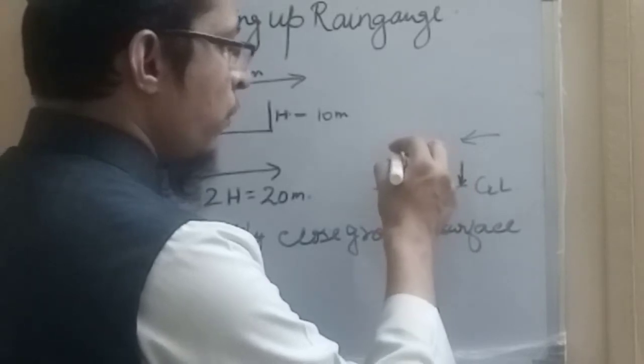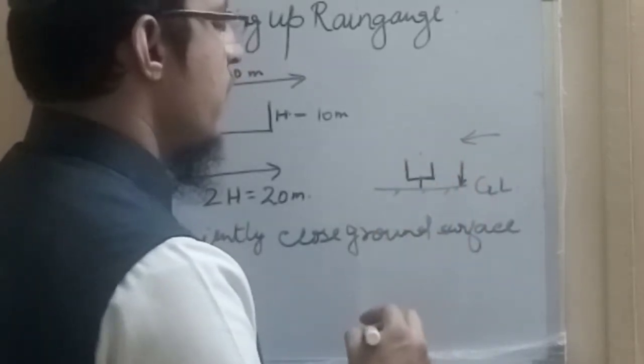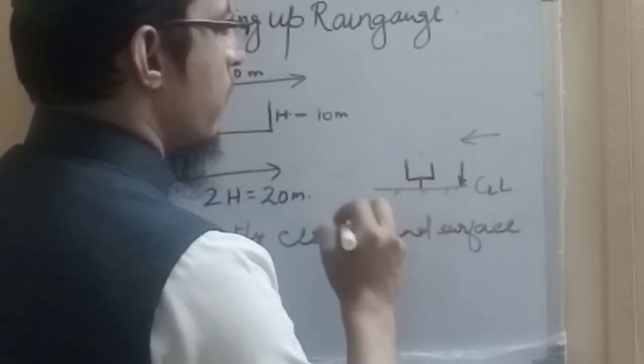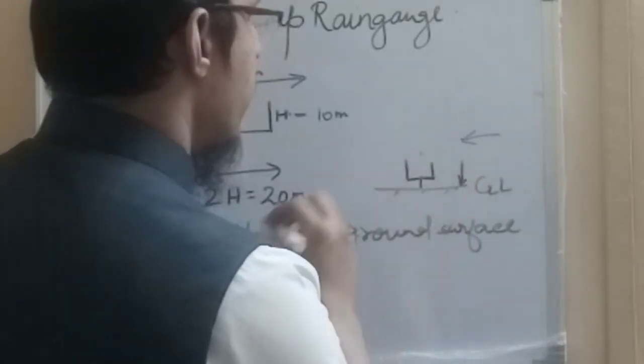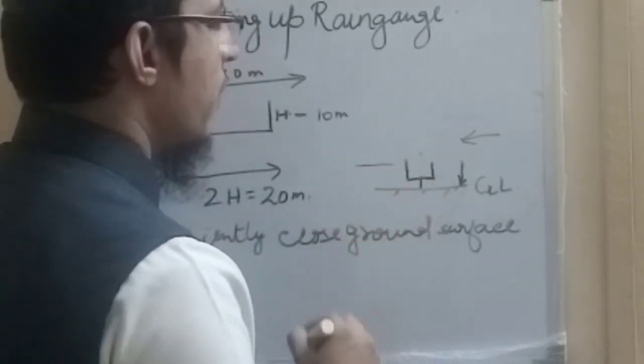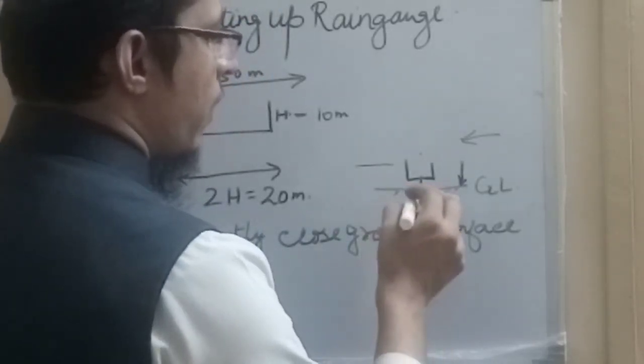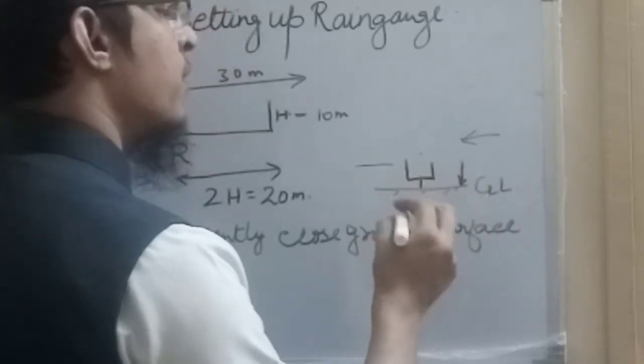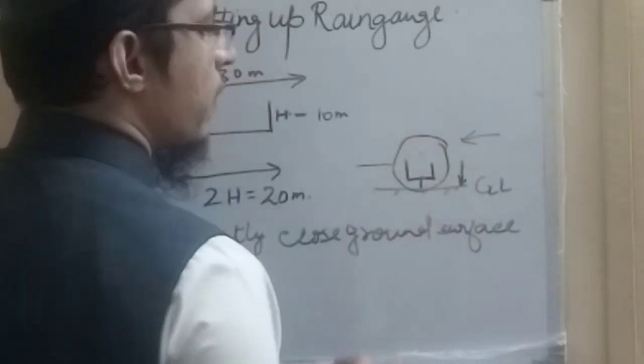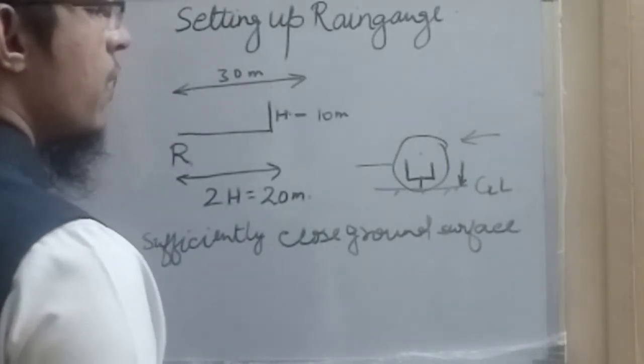In that case also, through the funnel, because funnel is again directed towards the mouth of the rain gauge, it will increase the depth of the rainfall. We will not get the actual rainfall depth, we will get the increased rainfall. Even there may be case that the water has accumulated and it is flowing like that. So in that case, we should avoid that. We should design in such a way that optimal height should be there so that there is minimum effect of turbulence and minimum effect of splashes on the rainfall reading.